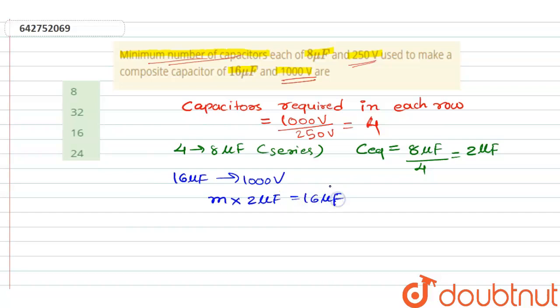Now don't be confused, this is number of rows, this is our C equivalent, and this is total capacitance. From here we can find number of rows, that is 16 upon 2, 8 rows. Now see, we have 4 capacitance in each row and we have total 8 rows.